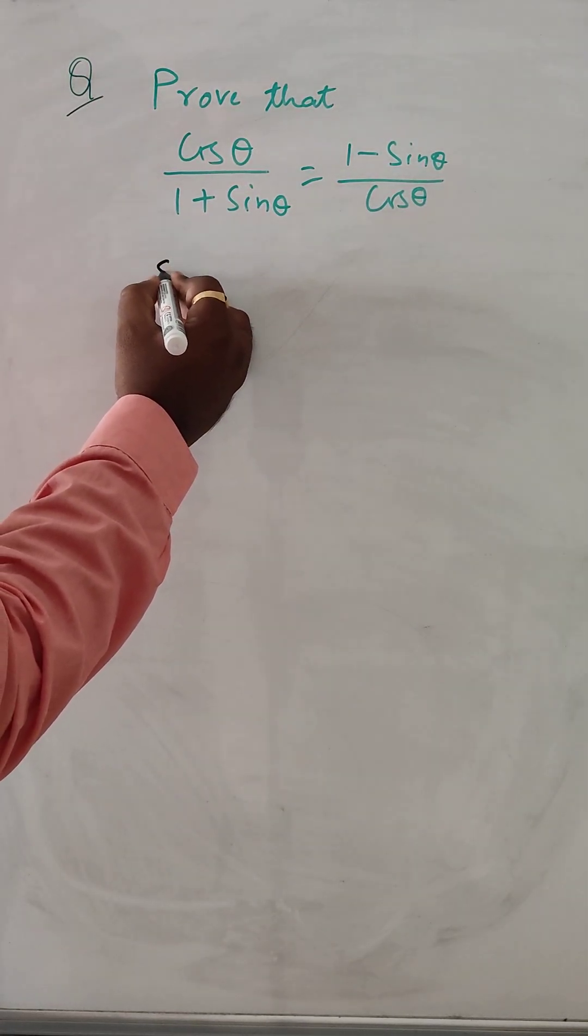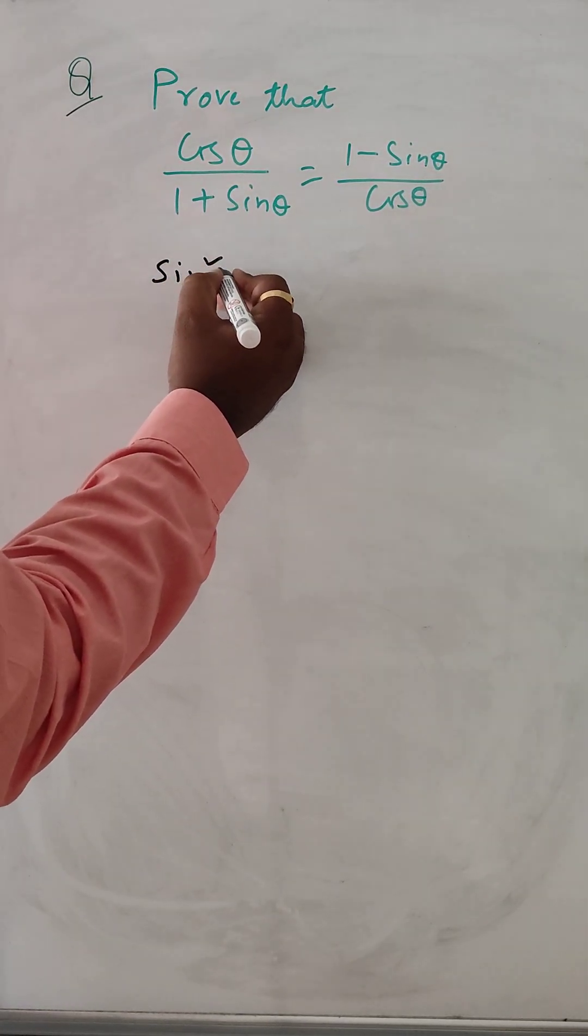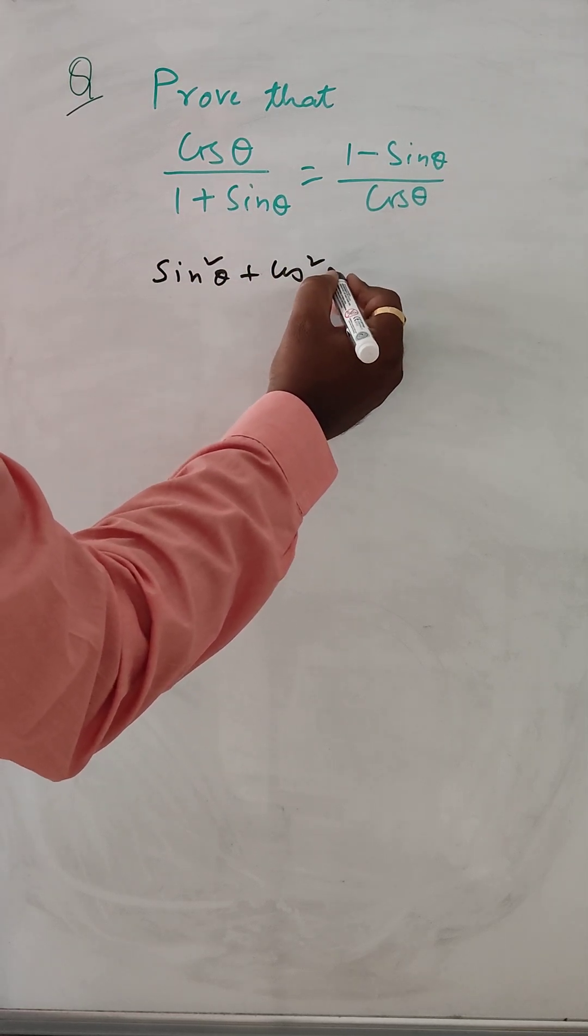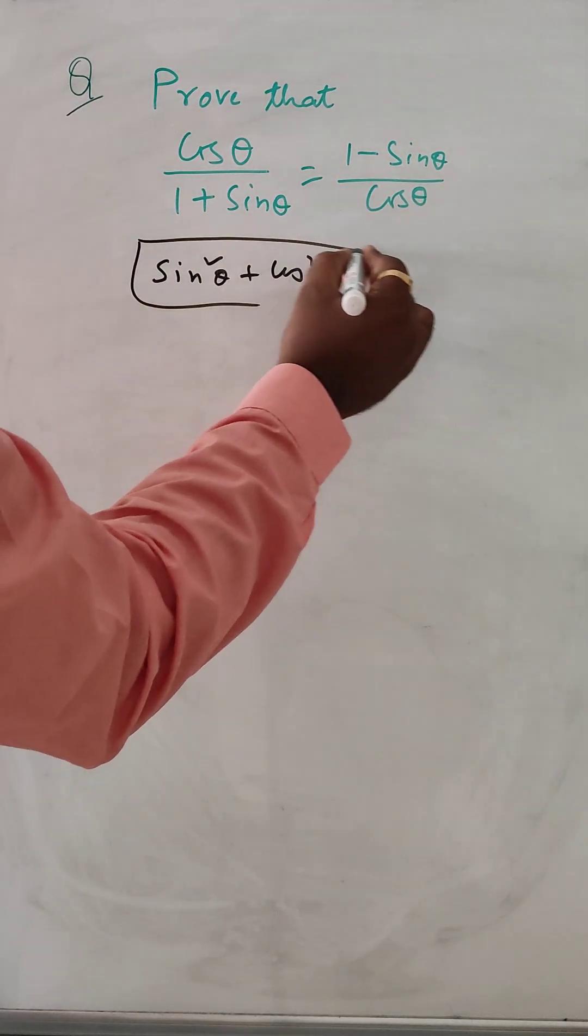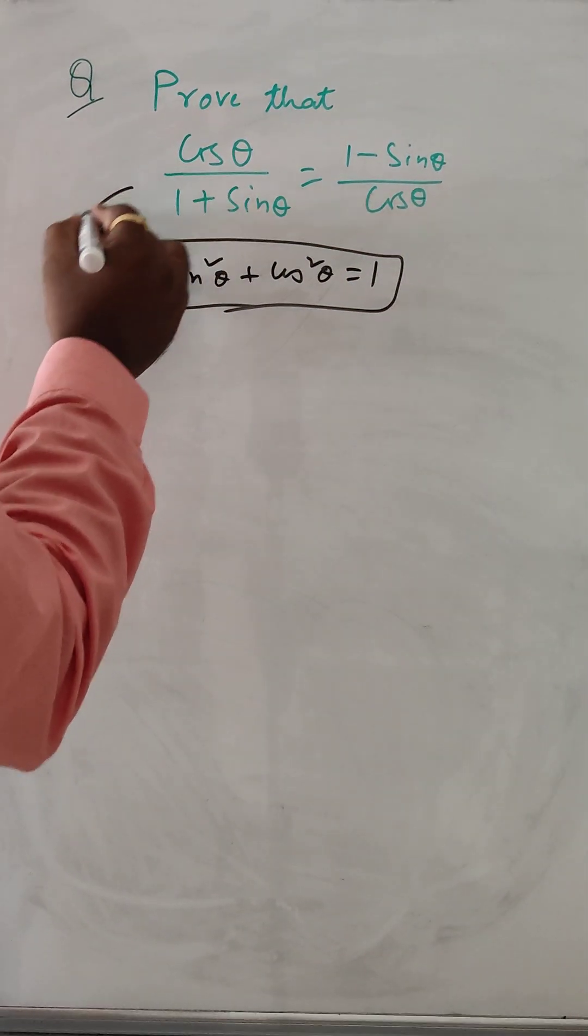So we know that one formula sin square theta plus cos square theta is equal to 1. So let's keep these things in mind. So let's take LHS.